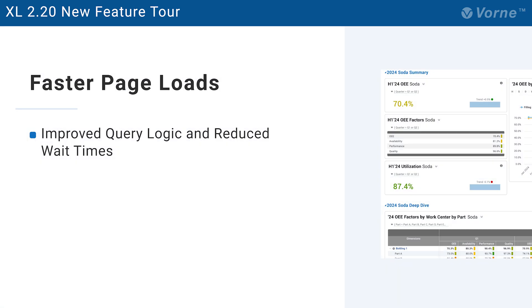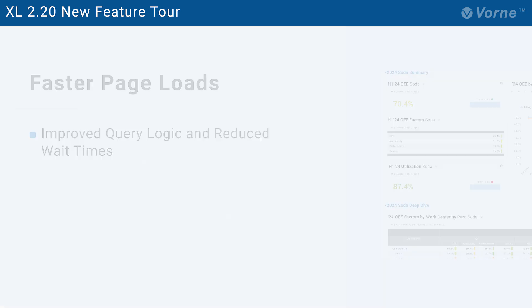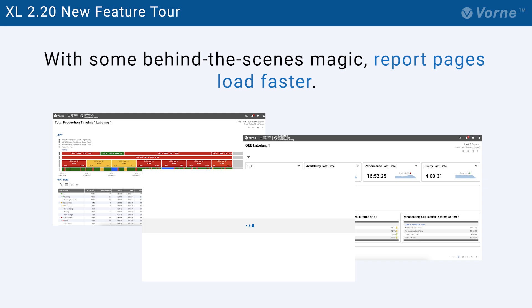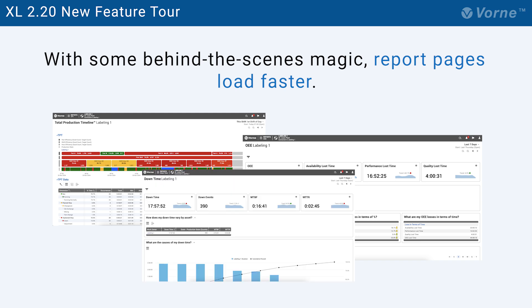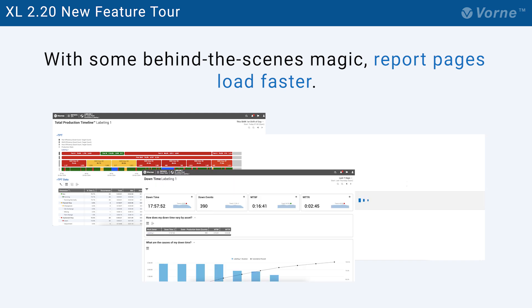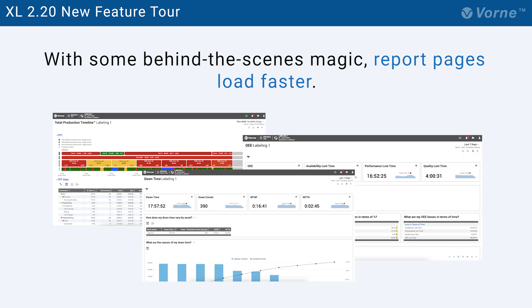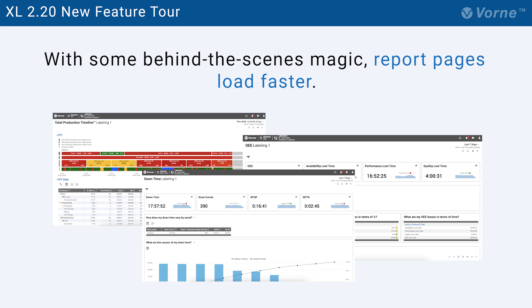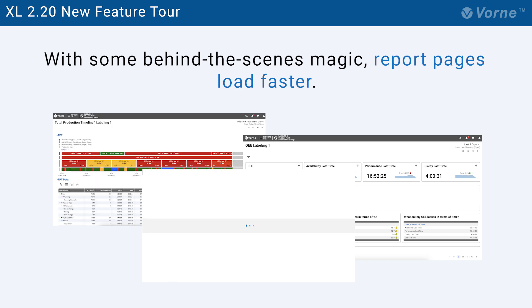Now let's take a look at a feature that delivers faster page loads in Excel. With some behind-the-scenes magic such as virtual pings, progressive page updates, caching state and more, report pages load faster, especially in environments where an Excel device might be powered off or otherwise inaccessible on your network.